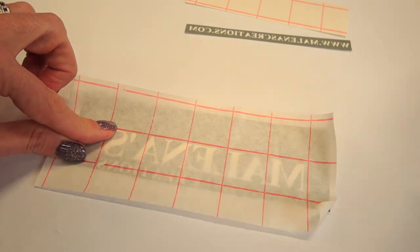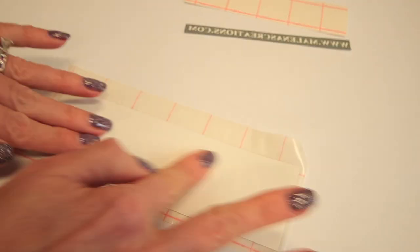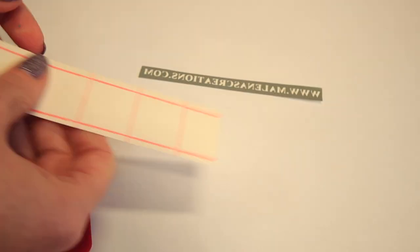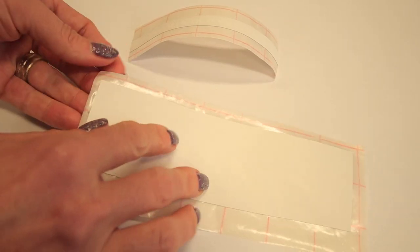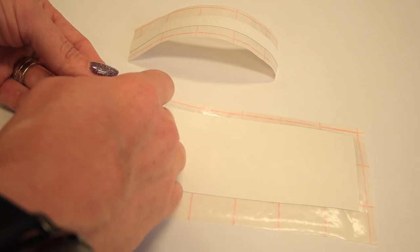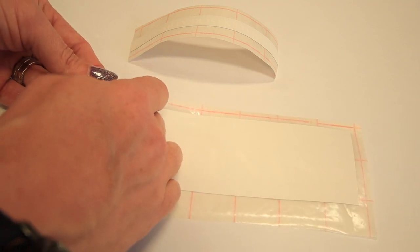We want to make sure we don't get any bubbles in it and we're just going to smooth that out really good. Probably take the squeegee and just flatten all that out, get all those bubbles out. Next what you're going to do is pull the white backing of the vinyl paper, pull that off and leave the vinyl stuck to the transfer paper.